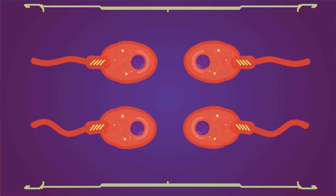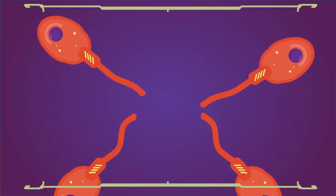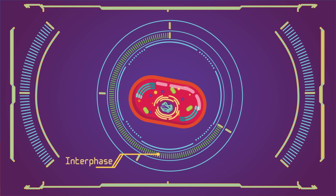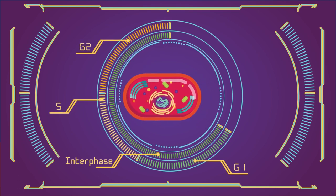Meiosis takes place in germ or sex cells called gametes, eggs in females and sperm in males. Similar to mitosis, cells also pass through the interphase, G1, S and G2 phase before they enter meiosis.